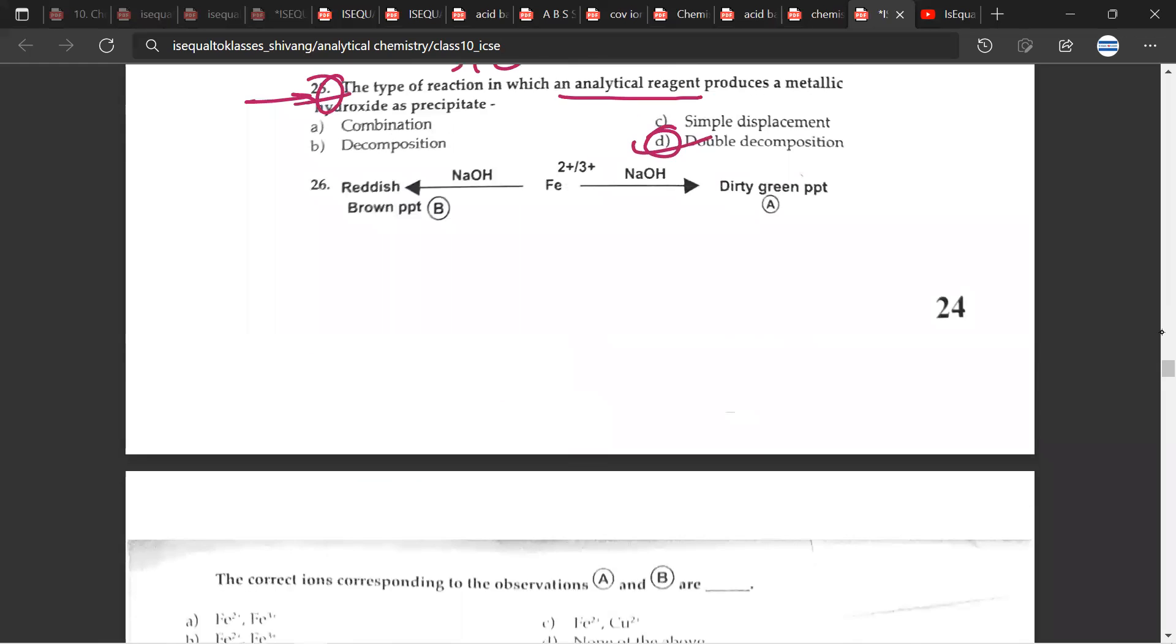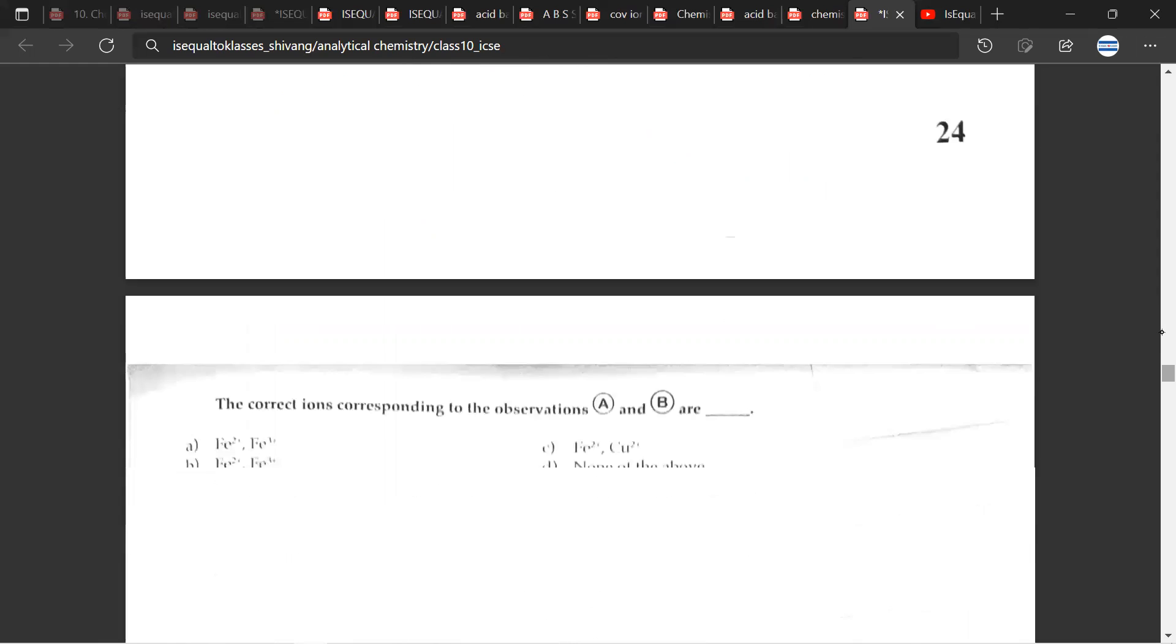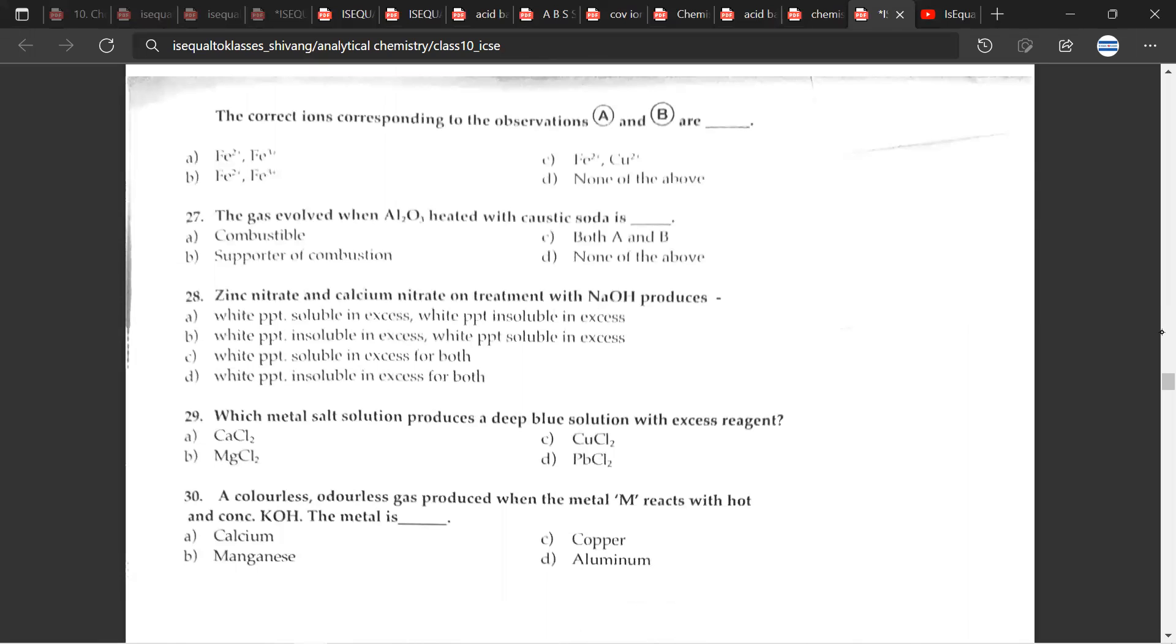Moving on to the 26th question. Just take a look at this table carefully. And let's move on to the options. So let's see the options. The correct ions corresponding to observations A and B are. So for this, the correct answer would be A, Fe2+ and Fe3+. 27th question. The gas evolved when Al2O3 aluminum oxide heated with caustic soda is. So it would be combustible.